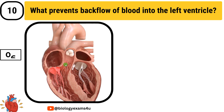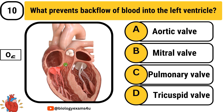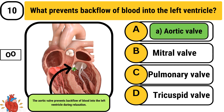Question number 10: What prevents backflow of blood into the left ventricle? Option A: aortic valve. Option B: mitral valve. Option C: pulmonary valve. Option D: tricuspid valve. The answer is the aortic valve. The aortic valve prevents backflow of blood into the left ventricle during relaxation.